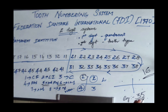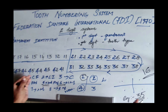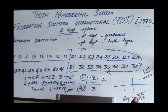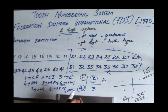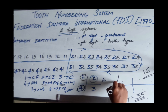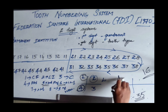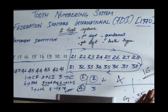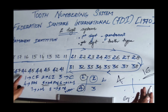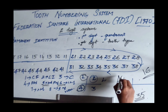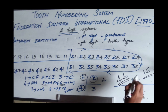Another example: mandibular right second molar — mandibular right is quadrant 4, second molar is tooth number 7, so it is written as 4, 7.